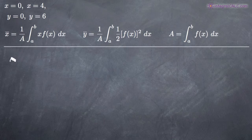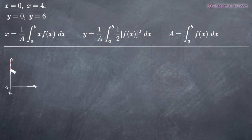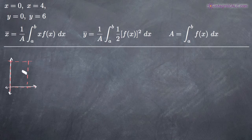Let's go ahead and quickly graph these since they're easy to graph and it'll give us a visual of our plane region. We are looking at the line x equals zero, which is the line here along the y-axis; y equals zero, which is this line here along the x-axis; and then x equals four, right about here, and y equals six. So these are our four lines and therefore our plane region — this rectangle here.